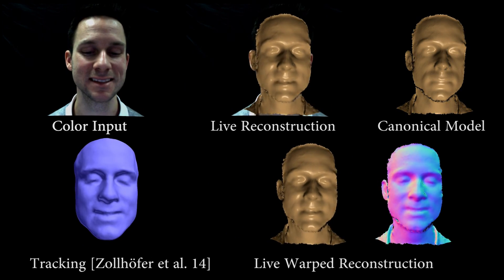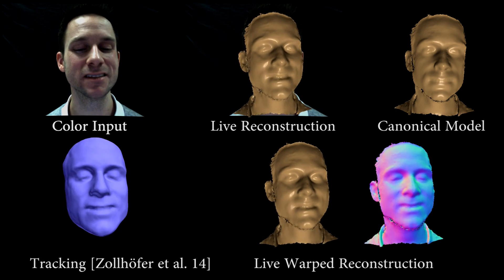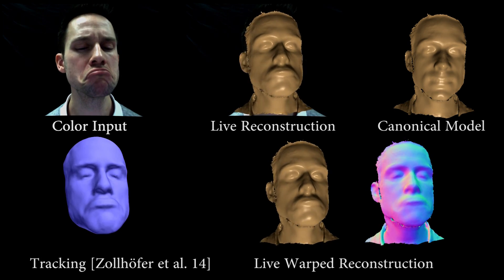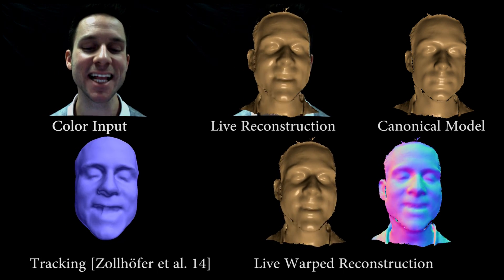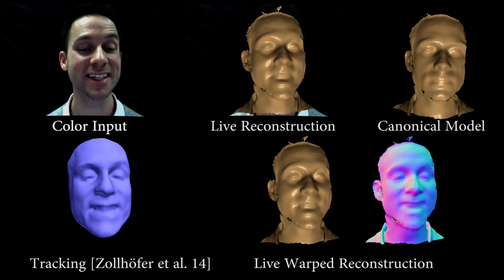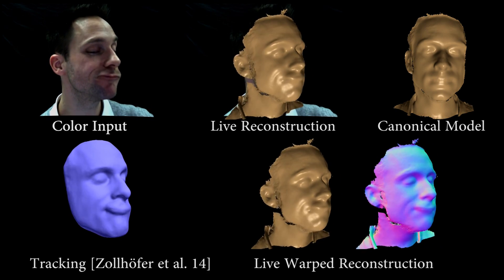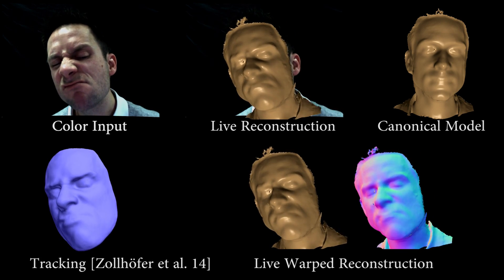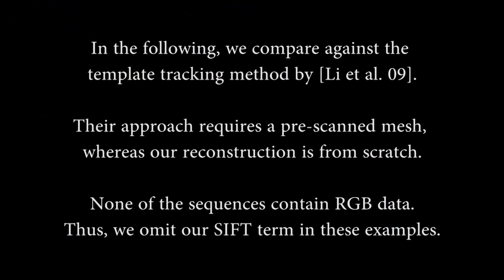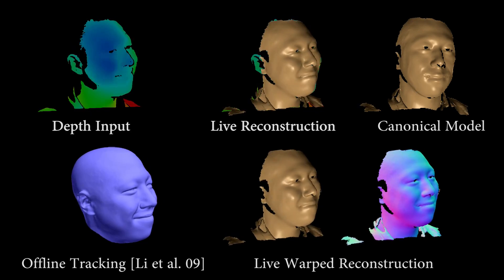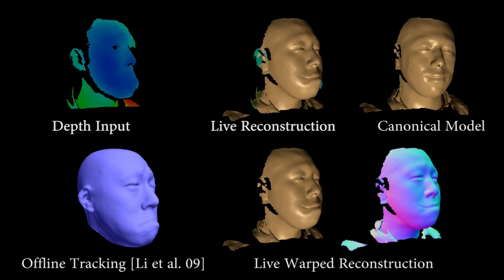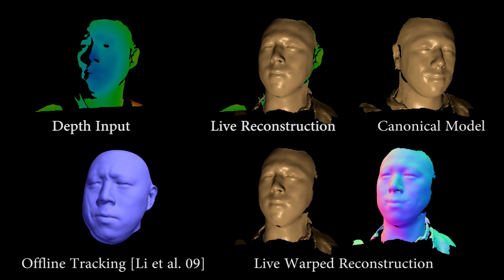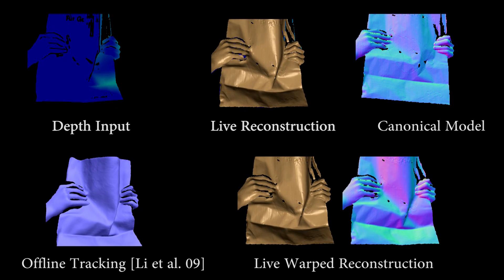In this example, we show that even fine-scale tracking of facial expressions is possible. Here we show a comparison to the offline template tracking method of Li et al. We achieve comparable results with an average error below 1 mm in observable surface regions.